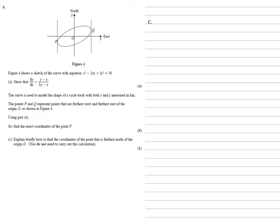We now need to explain briefly how to find the coordinates of the point that is furthest north of the origin O. Looking at our diagram, we can see the point furthest north is the top of the oval which has a gradient of zero - completely horizontal.